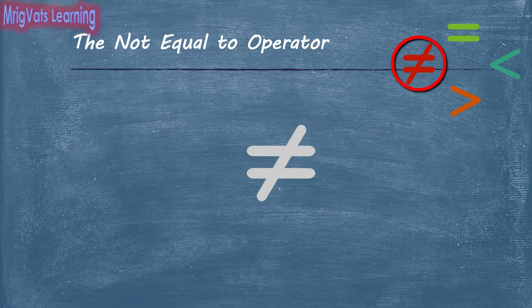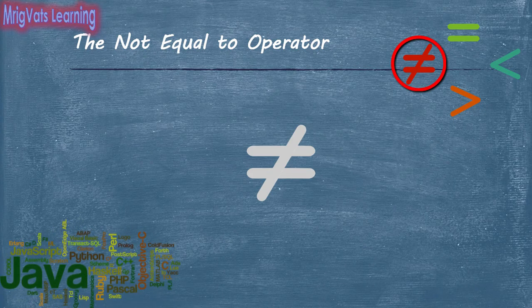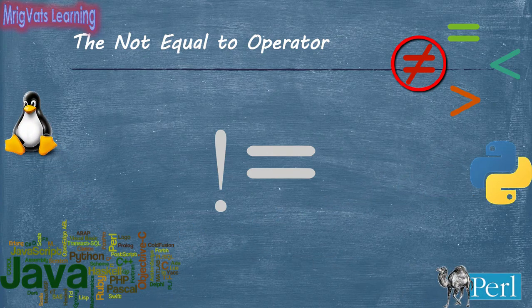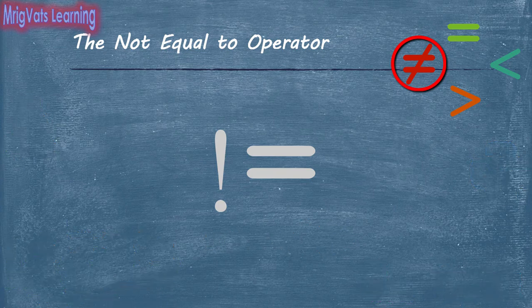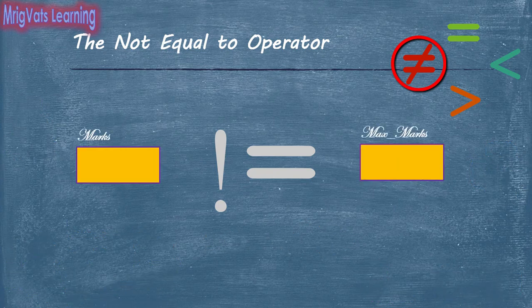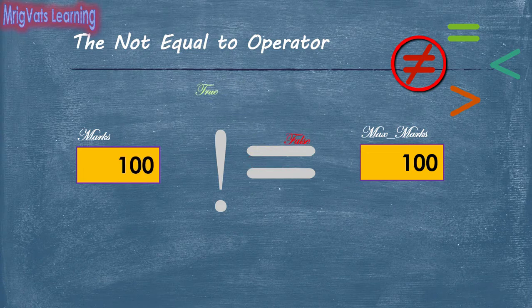Not equal to is another relational operator that you use to check if two values are not equal. Most programming languages support the exclamation equal to sign to compare the values of two operands. However, some languages such as Python, Perl and shell scripts in Unix support NE as the relational operator. Additionally, SQL language supports exclamation equal to as well as less than greater than signs as the not equal to operator. The computer gives true if the values are not equal and false otherwise.